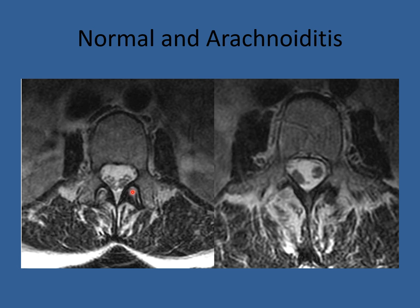Arachnoiditis is a condition affecting the cauda equina. Normally, the cauda equina is heavier than water, so when lying down it pools to the bottom of the canal, but you can still distinguish individual nerve roots. Think of nerve roots as having negative charge so they don't typically touch each other. In arachnoiditis, when the arachnoid membrane is inflamed, the nerves can clump together, causing a permanent condition — so it's valuable to know what to look for.